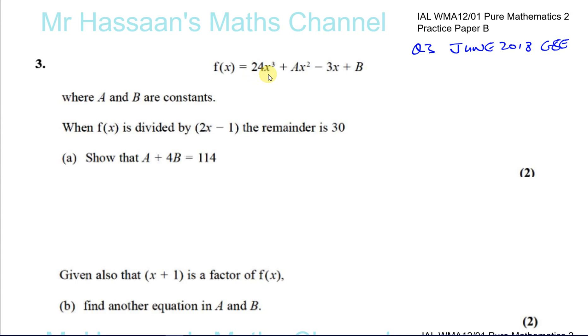The problem states: f(x) = 24x³ + ax² − 3x + b, where a and b are constants. When f(x) is divided by 2x − 1, the remainder is 30. We need to show that a + 4b = 114.